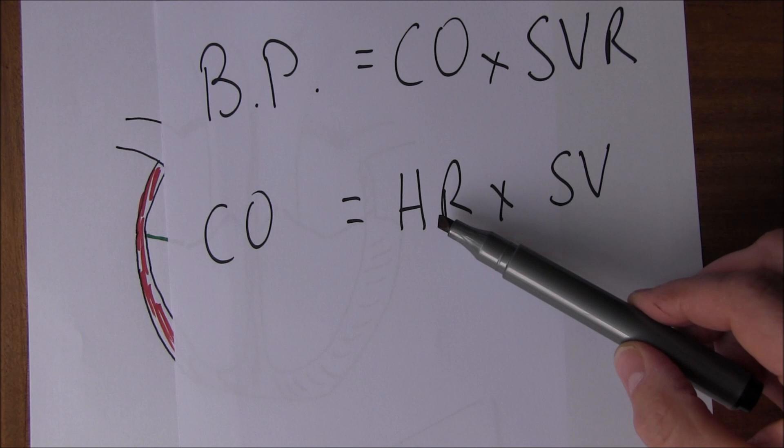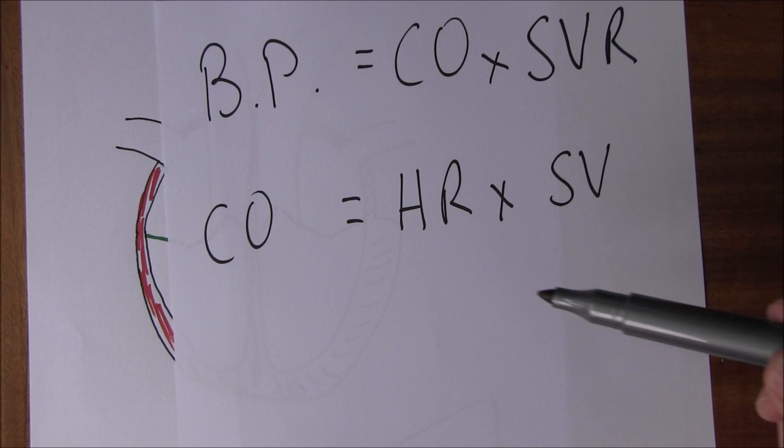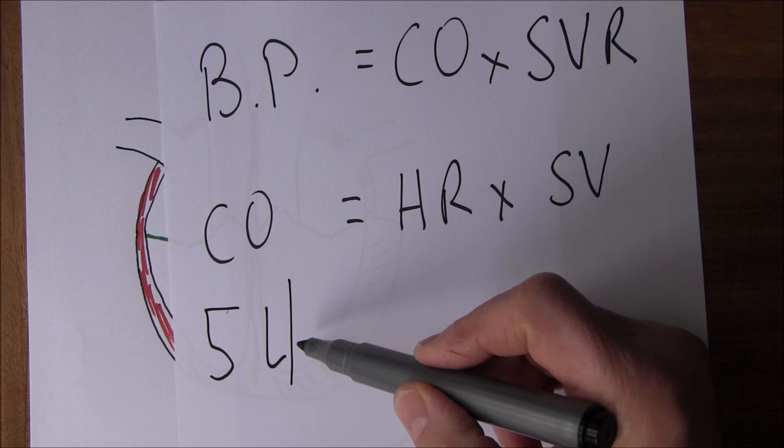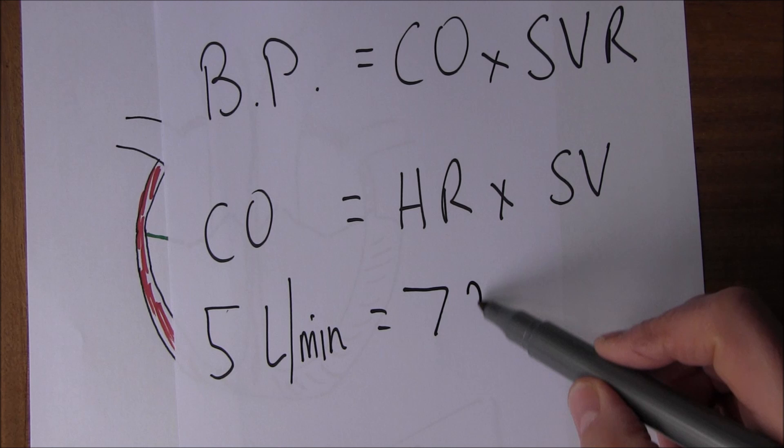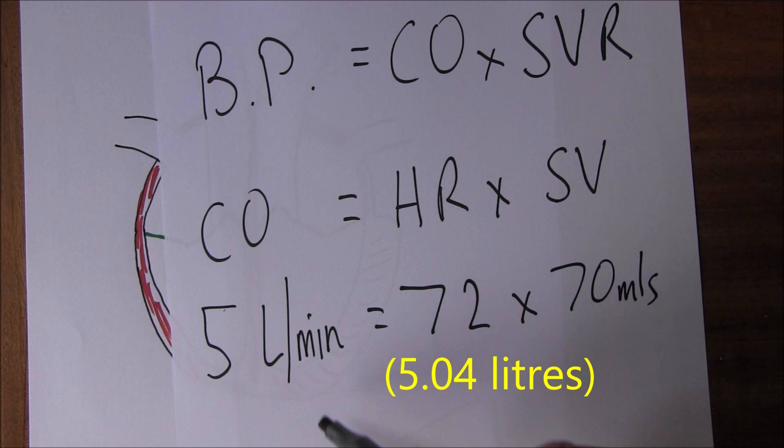If the heart is beating 70 times a minute and the stroke volume is 70 millilitres, that gives us 4,900 millilitres as the cardiac output - normally around five litres per minute. So with a heart rate of about 70 and a stroke volume of about 70 millilitres, heart rate times stroke volume gives us approximately five litres per minute.